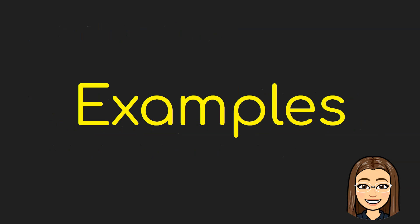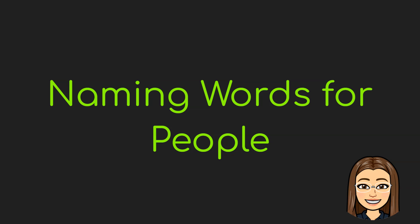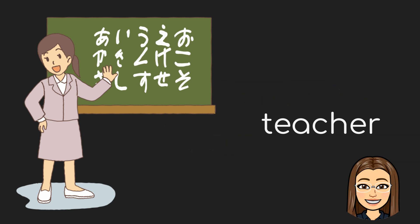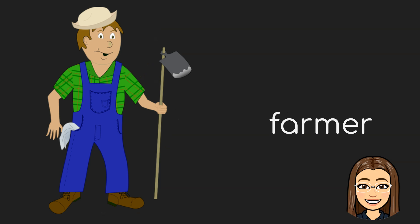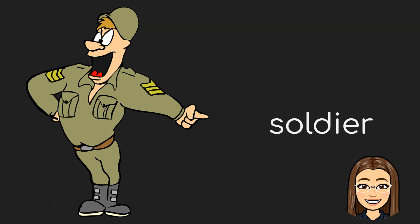Now, let's talk about examples of naming words or nouns. First, we have naming words for people. This person is called a teacher. A teacher is the one who teaches students inside a school. Next is called a doctor. A doctor is the one who cures or heals patients inside the hospital. Next we have here a farmer. A farmer is the one who plants crops like vegetables and fruits. And also, we have here a soldier. A soldier is the one who defends our country.